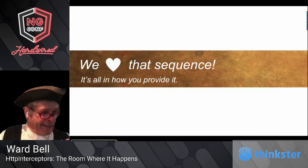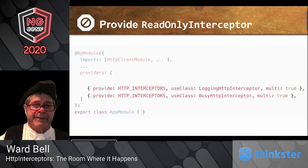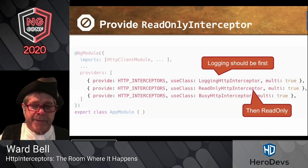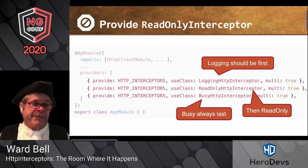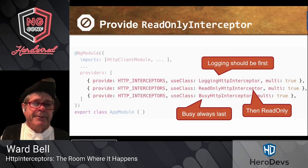To get that to work, it's really all in how you provide it. We already had the logging and busy interceptors, but we want the read-only to block before we get to busy. The order in the array matters, so we move it up and insert read-only interceptor in the right position. Because order matters, busy should always be last — there's no reason to throw a spinner unless you're actually going to the server.